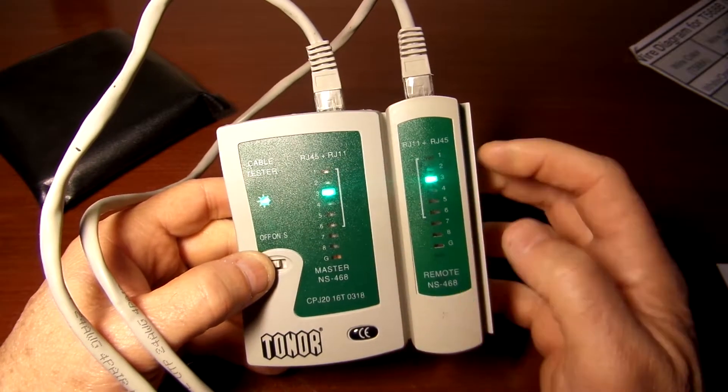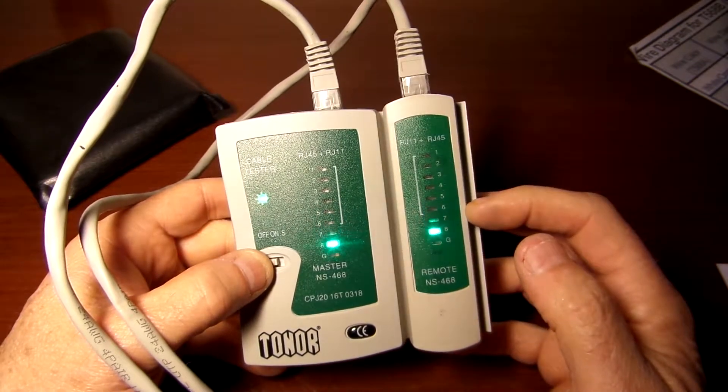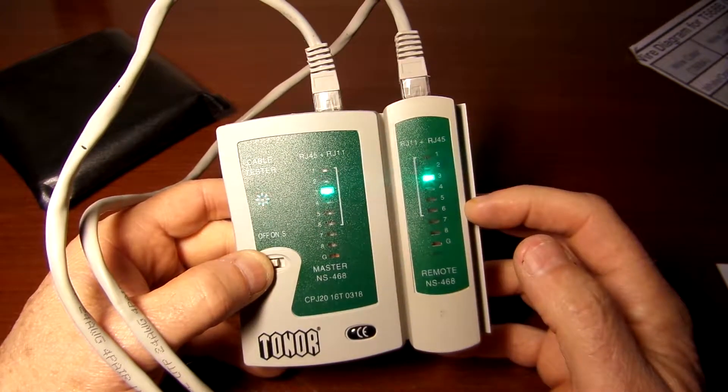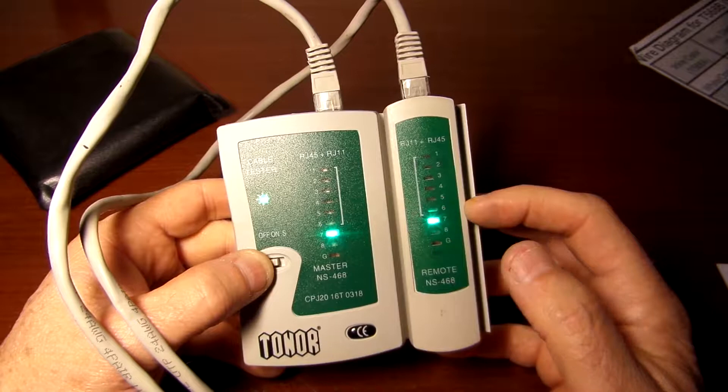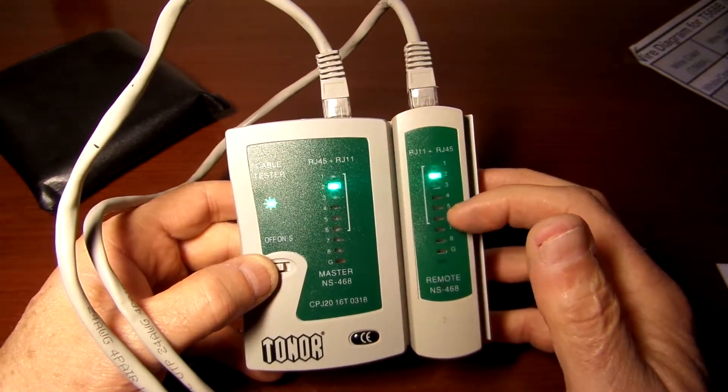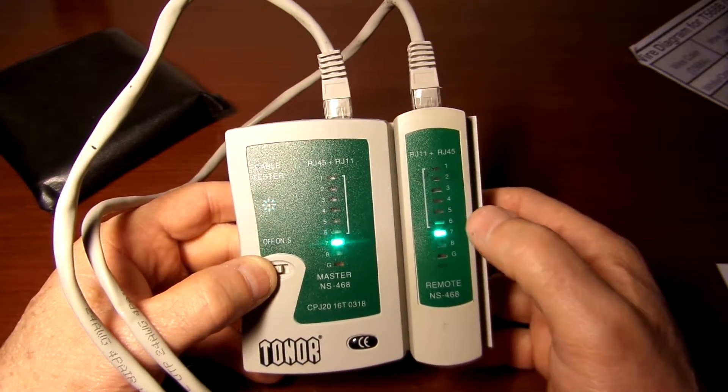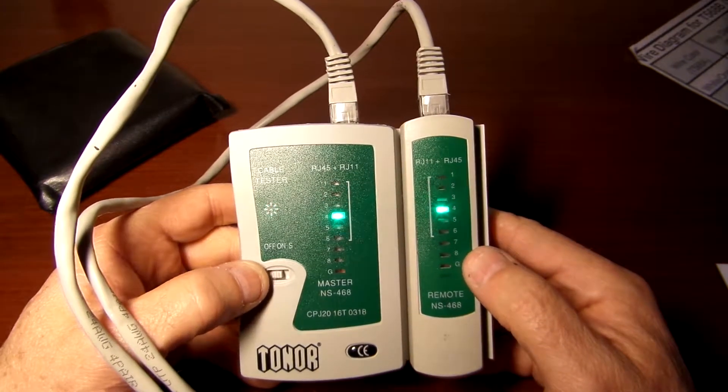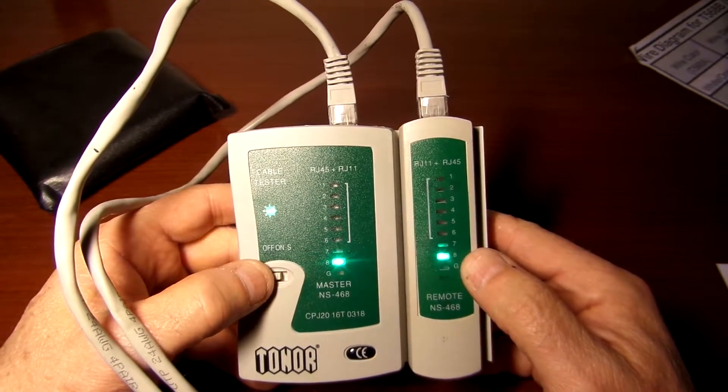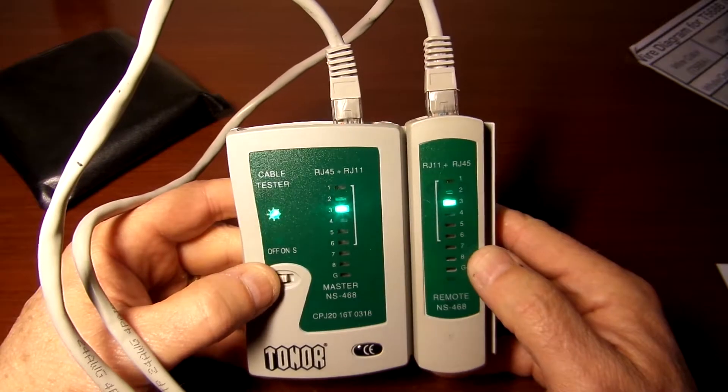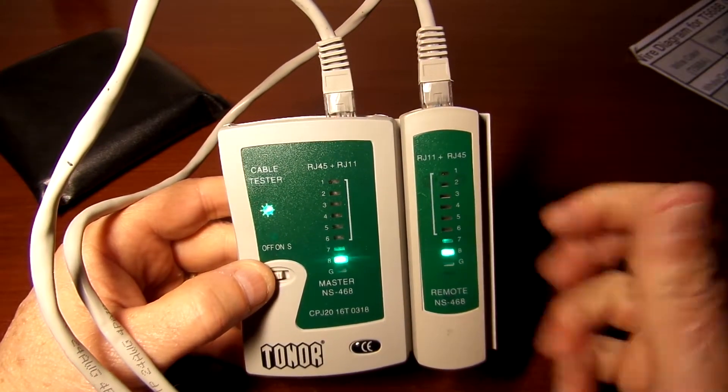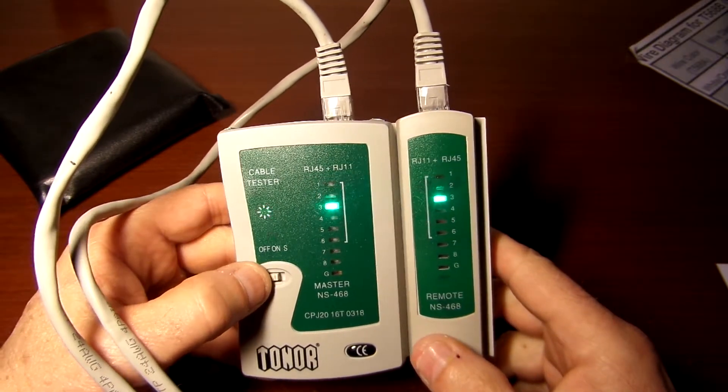If there would be a missing contact, there would be no continuity on one side or the other. You would see it skip like level six or level seven, then you know which pin is not getting good contact. That's why it's always good when you're crimping these to crimp a couple times to make sure that you've got good continuity.